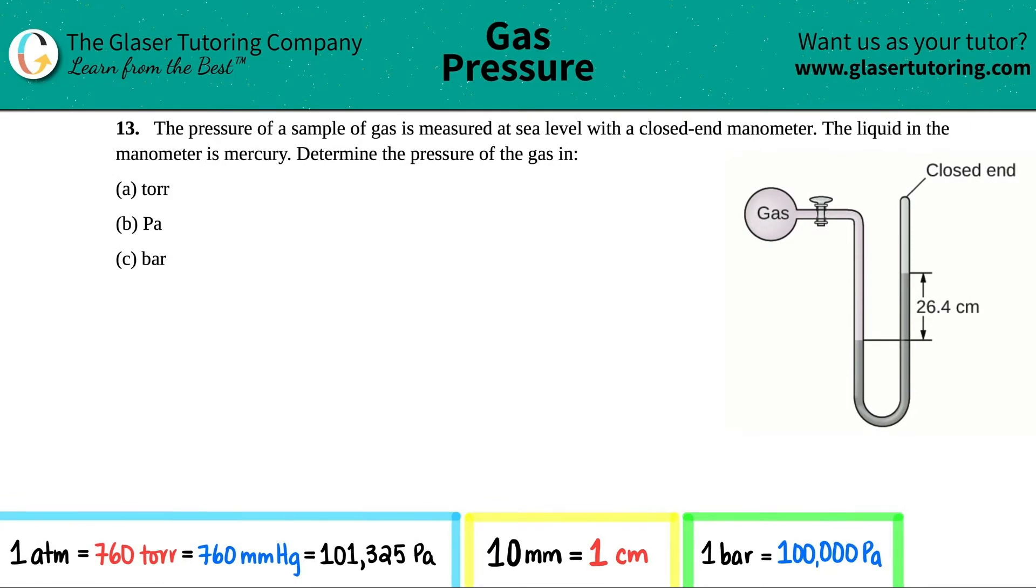Number 13. The pressure of a sample of gas is measured at sea level with a closed-end manometer. The liquid in the manometer is mercury. Determine the pressure of the gas in torr, pascal, and bar.